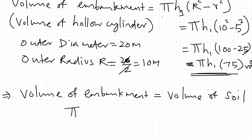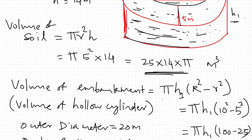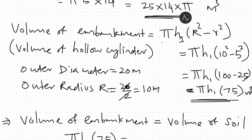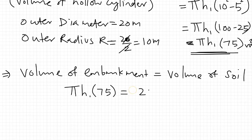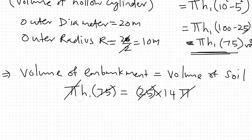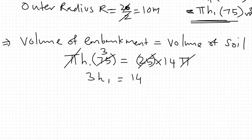Setting volume of soil equal to volume of embankment: π × h1 × 75 = π × 25 × 14. Pi cancels on both sides. So 75 × h1 = 25 × 14 = 350, which gives 3 × h1 = 14.